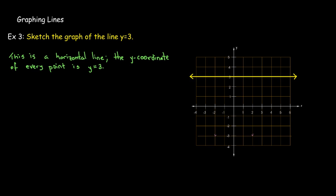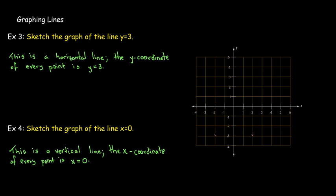And what about x equals 0? Again, a special case. x equals a number. This is going to be a vertical line. And the x coordinate of every point is x equals 0. x equals 0, that is on the y-axis. So x equals 0, something worth remembering. That is the equation of the y-axis.